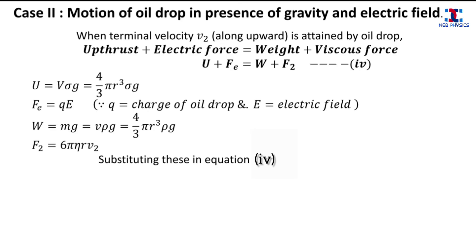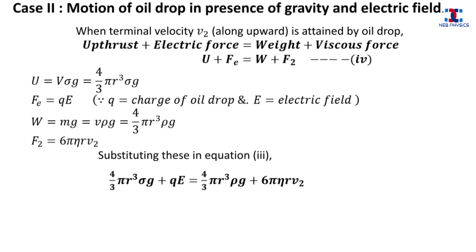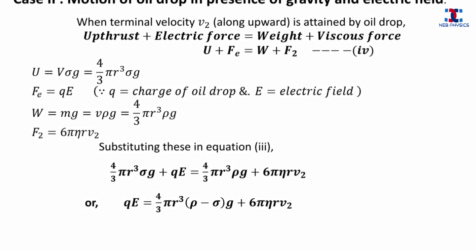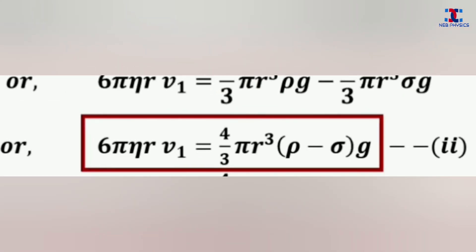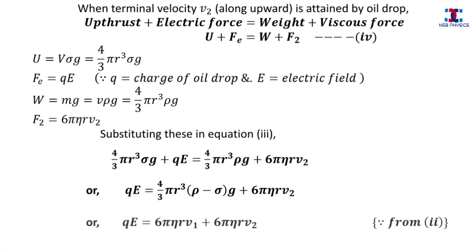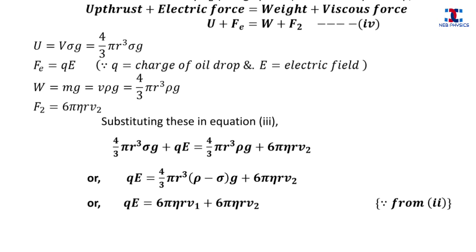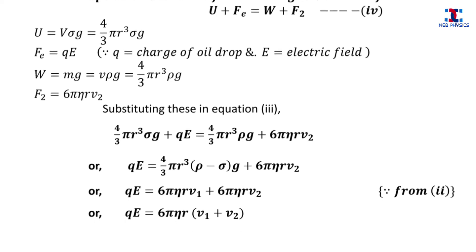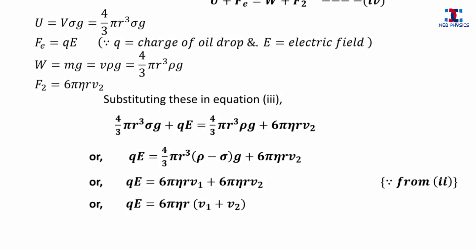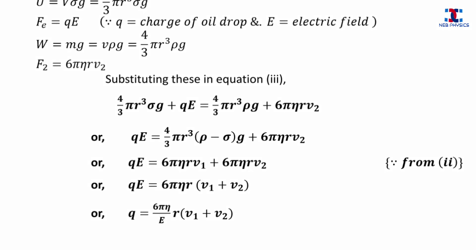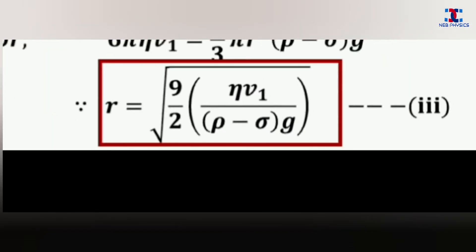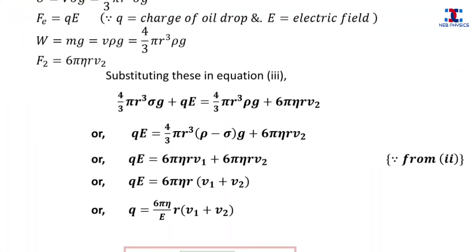Substituting these values in equation four and rearranging, taking the common factor, we get an expression. Substituting the value of the first term on the right-hand side from equation two, and taking 6πηr as common, we get the expression for charge q of the oil drop. Substituting the value of r from equation three, we get the final expression for q, the charge of the oil drop.